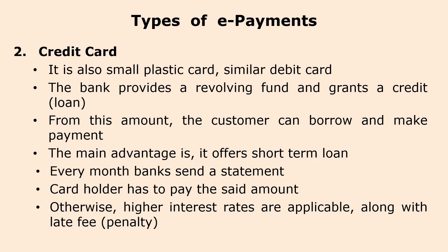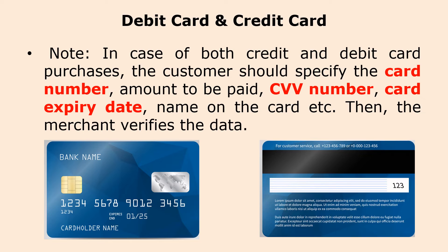The customer has to repay the amount by the specified date. Otherwise, banks charge very high interest rates along with penalties. That is one important point to remember with credit cards. A common feature of both debit cards and credit cards is that customers have to specify the card number, along with the CVV number, card expiry date, and name on the card. These details are verified by the merchant. Only when the merchant is satisfied with the card number, CVV number, date of expiry, and name of the customer are these verified and the payment is processed. Otherwise the payment will be rejected.